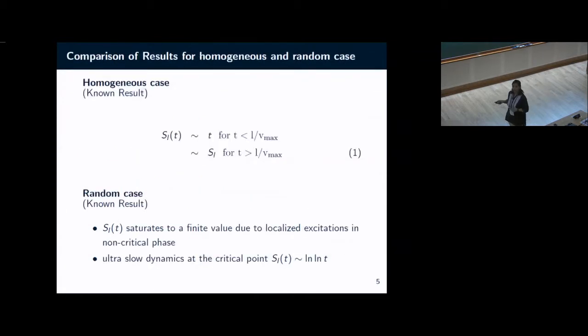Before commenting on what happens in this Aubrey-Andre model, what is already known is that if your system is homogeneous, for example if it is just a transverse Ising model where the states are extended eigenstates or delocalized states, what is seen is that the entanglement entropy after such a sudden quench increases linearly with time up to some time, and then after that it saturates to some constant value.